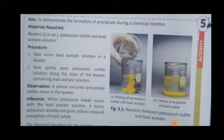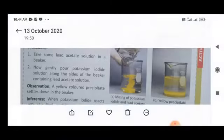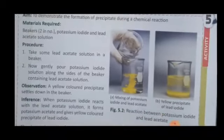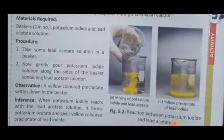Initially, both liquids are clear and colorless. But on adding potassium iodide, you can see a yellow color solid forming. A solid is formed as a result of mixing these two clear liquids, and it is settling down because it is insoluble. This insoluble solid is called a precipitate — you can see the yellow color precipitate forming here.